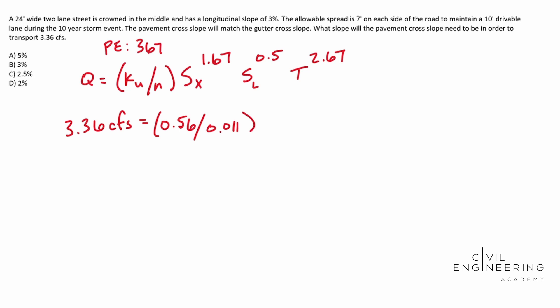And then we have S X, which we are solving for, the cross slope, to the 1.67 power. And then we have S L, which is our longitudinal slope. It gives it to us in our problem. It's 3%. So 0.03. Make sure it's written in decimal form. This is to the 0.5 power.